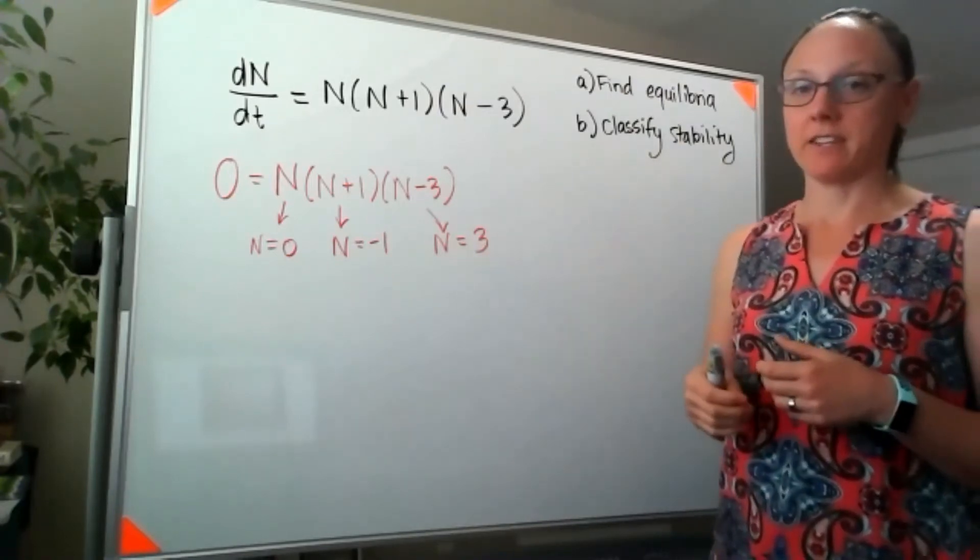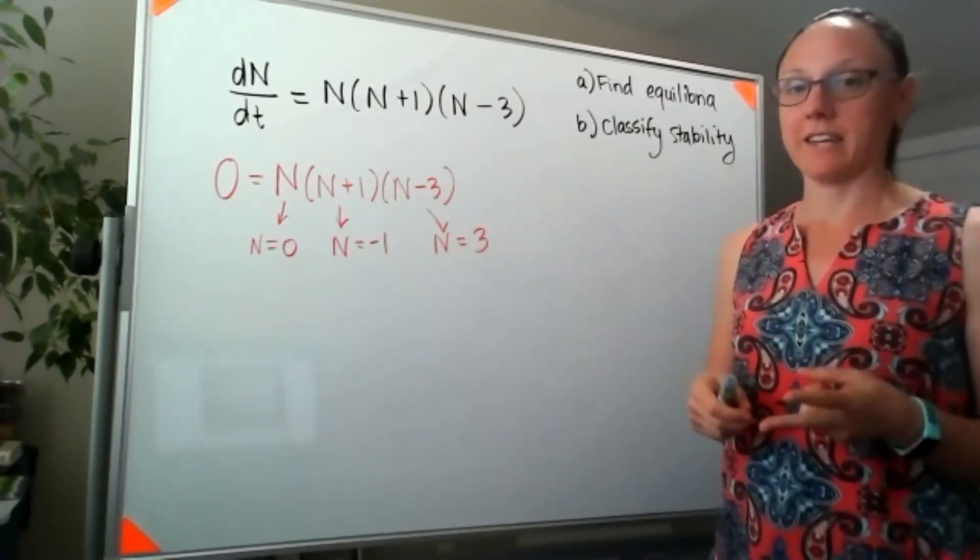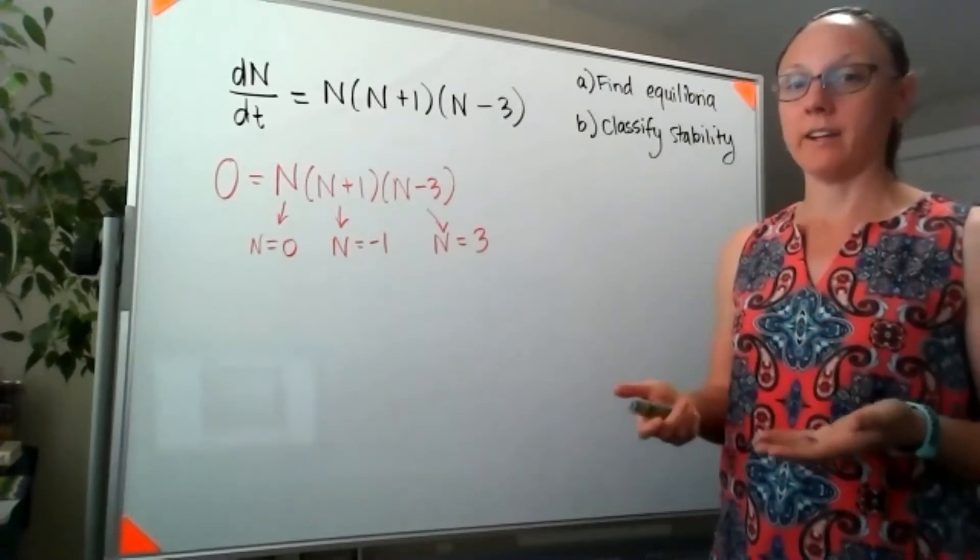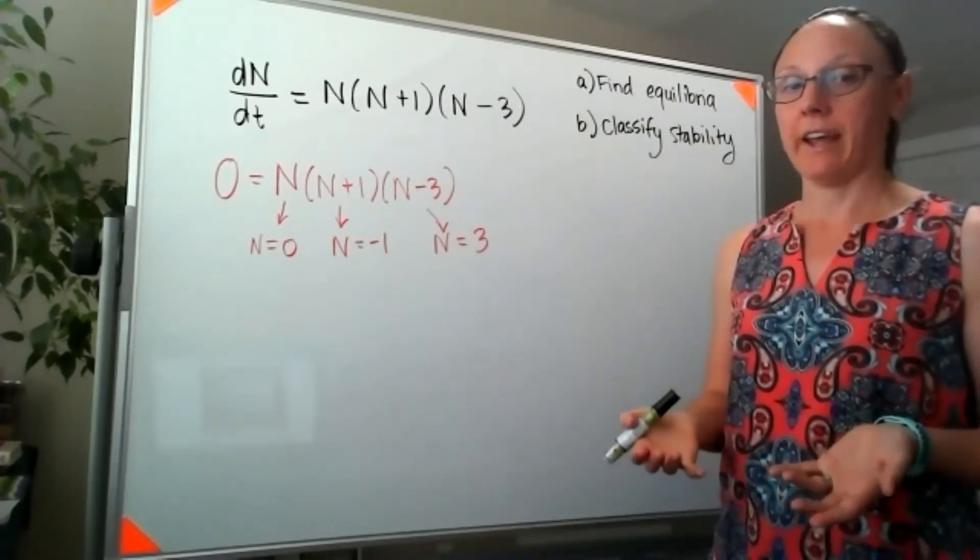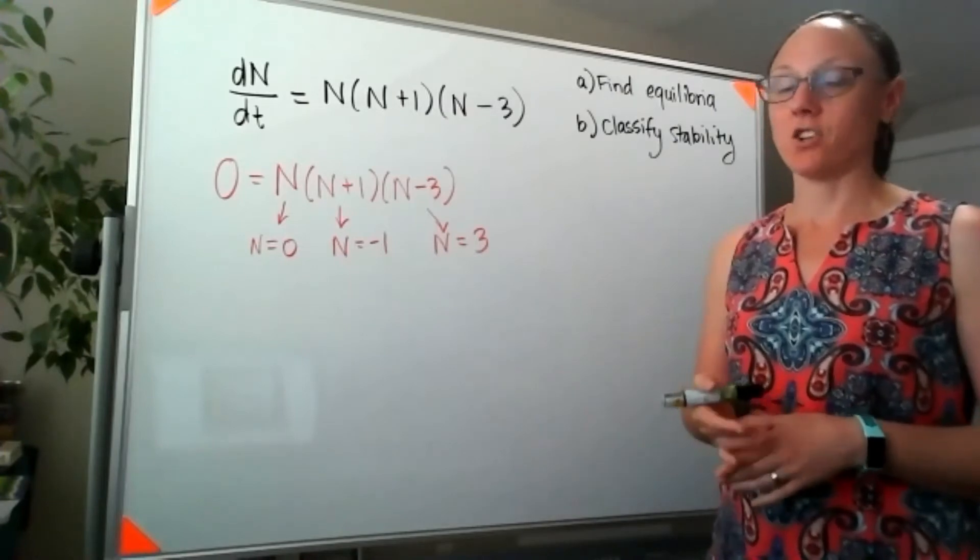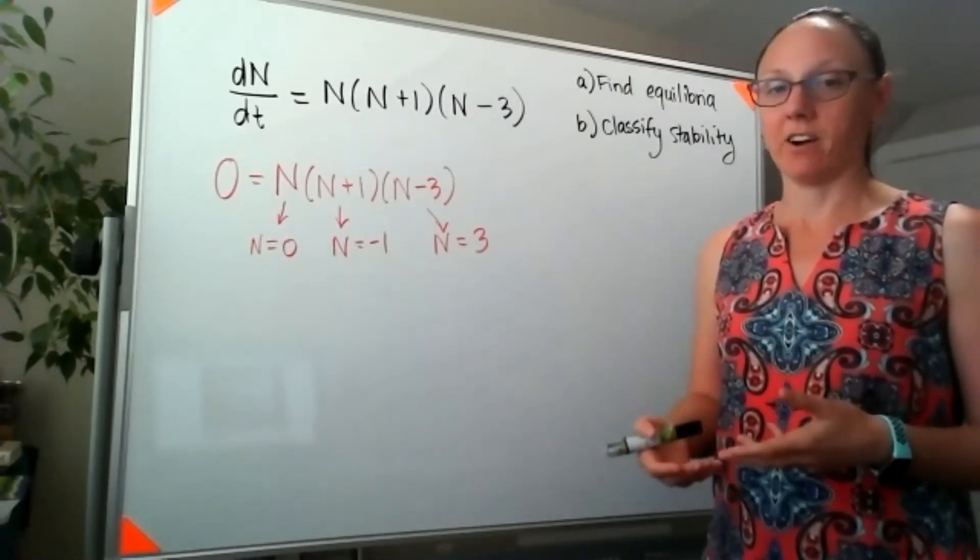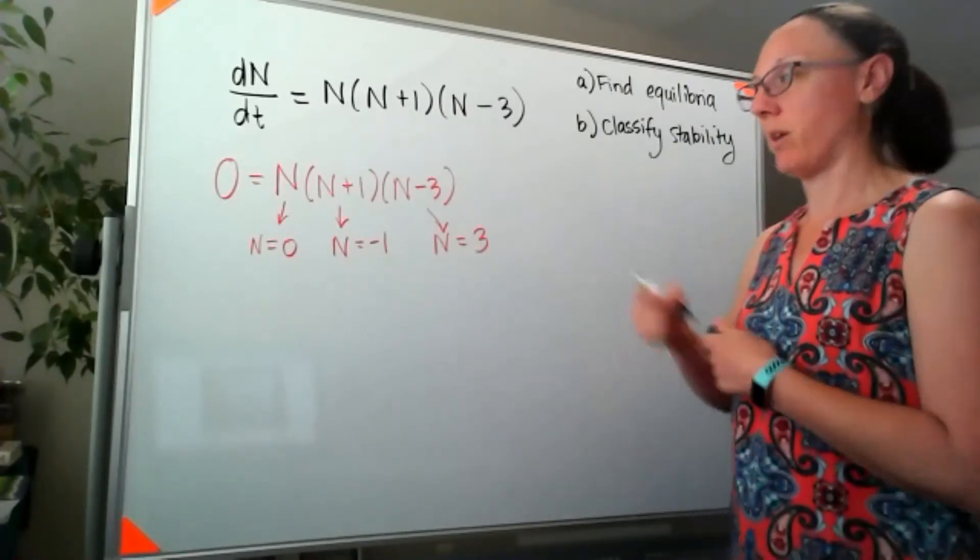Moving on to classify stability, we've got two options for classifying stability. One is to draw the phase plane and to do this graphically, and the other is to use our local stability criterion. So let's start with the phase plane.